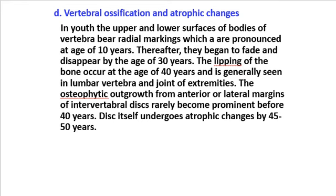Vertebral ossification and atrophic changes: in youth, the upper and lower surfaces of the bodies of the vertebrae bear radial markings which are pronounced at the age of 10 years. Thereafter they begin to fade and disappear by the age of 30 years. Lipping of the bone occurs at the age of 40 years and is generally seen in human vertebrae and joints of extremities. The osteophytic outgrowth from anterior and lateral margins of intervertebral discs rarely becomes prominent before 40 years. The disc itself undergoes atrophic changes by 45 to 50 years.